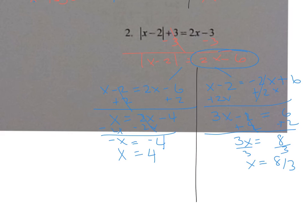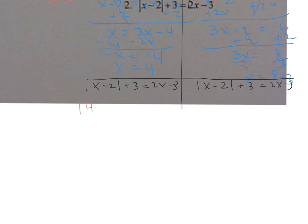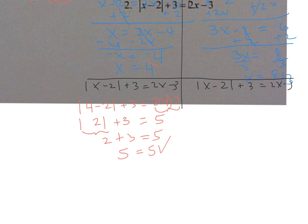Now we check both answers in the original equation: the absolute value of x minus two plus three equals two x minus three. Plugging in four: the absolute value of four minus two plus three — the right side is two times four minus three, which is five. The absolute value of two is two, plus three equals five. Five equals five, so four is a good answer.